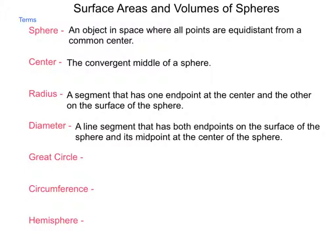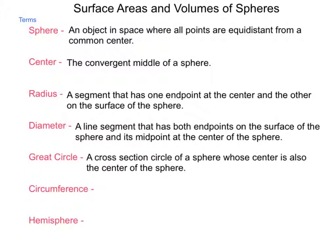Next comes great circle. Now, great circle, circumference, and hemisphere are spoken of in regards to a plane intersecting our sphere. Any time that a plane makes a cross-section of a sphere, it will form a circle of some sort. But the great circle is a cross-section circle of a sphere whose center is also the center of the sphere. This will maximize the circle that is created on that sphere.